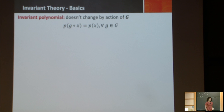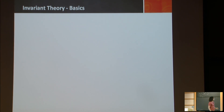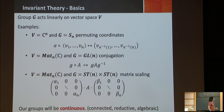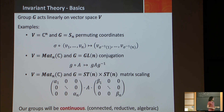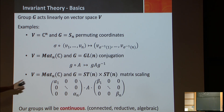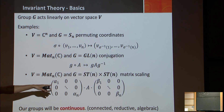Audience question: Do you really need ST_n cross ST_n? Could you just have one copy and do a conjugation? Response: If I do conjugation, it's another problem. Here I'm allowing 2n minus 1 degrees of freedom.